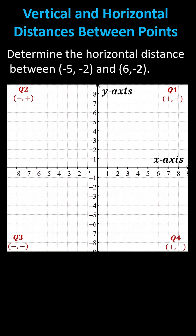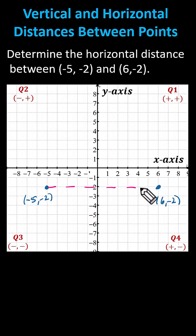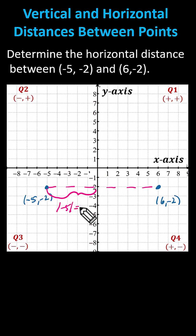Let's take a look at a second example. Now we want to find the horizontal distance between the two given points. Let's plot the points. Negative five comma negative two is here, and six comma negative two is here. Our goal is to determine this horizontal distance. Starting with the point on the left, the distance from this point to the y-axis is controlled by x. It's the absolute value of negative five, which is five units.